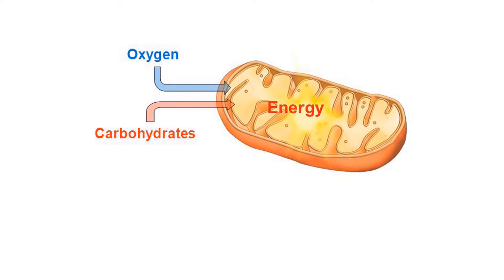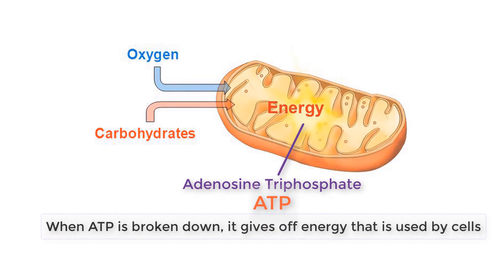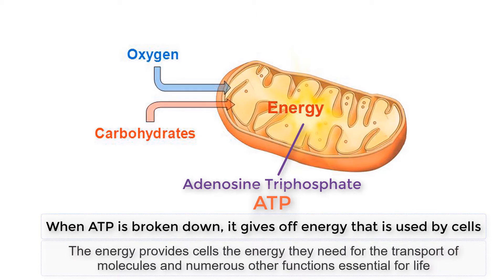Energy is essential for all cells to live and to perform their necessary functions. Energy is stored in cells in the form of a molecule known as adenosine triphosphate, or ATP. When ATP is broken down, it gives off energy that is used by cells — providing the energy they need for the transport of molecules and numerous other functions essential for life.